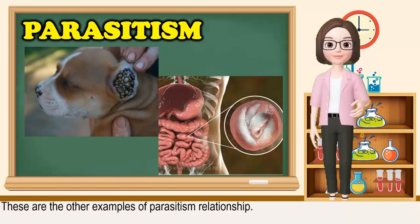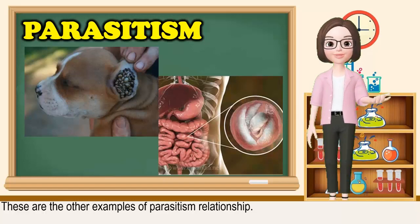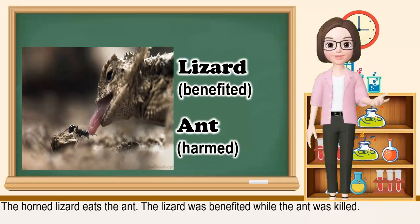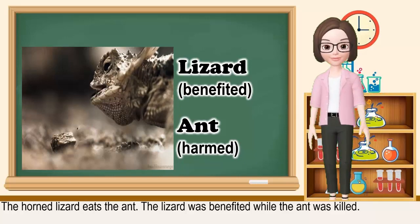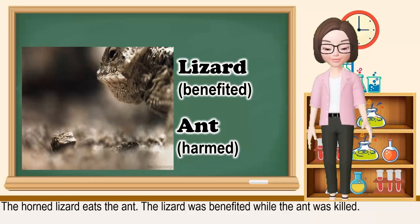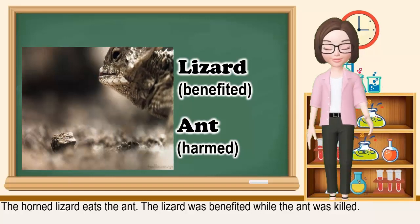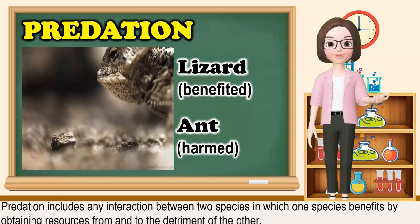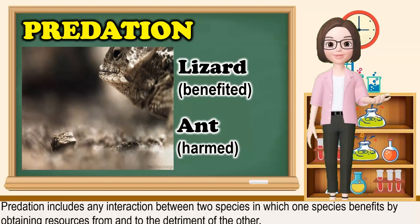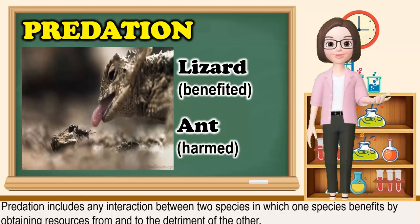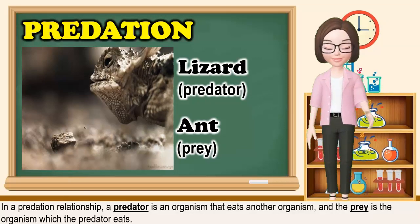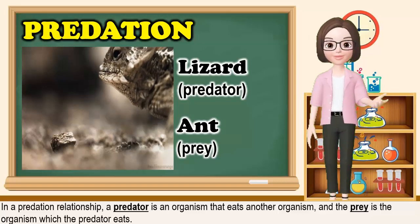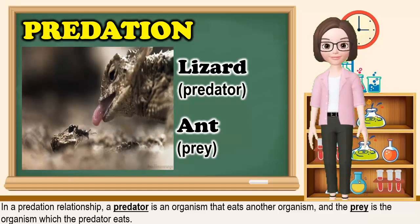Here are some other examples of parasitism. Take a look at this video. The horned lizard eats the ant. The lizard is benefited while the ant is killed. This is called predation. Predation includes any interaction between two species in which one species benefits by obtaining resources from and to the detriment of the other. In a predation relationship, a predator is an organism that eats another organism, and the prey is the organism which the predator eats.